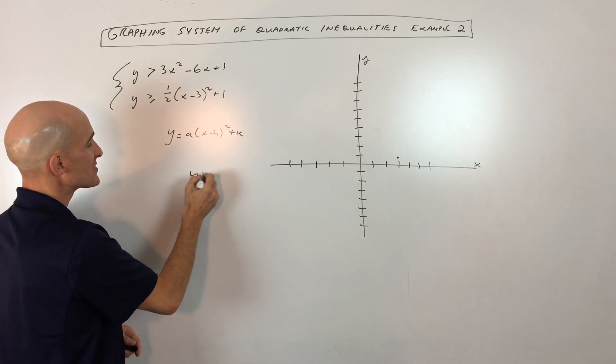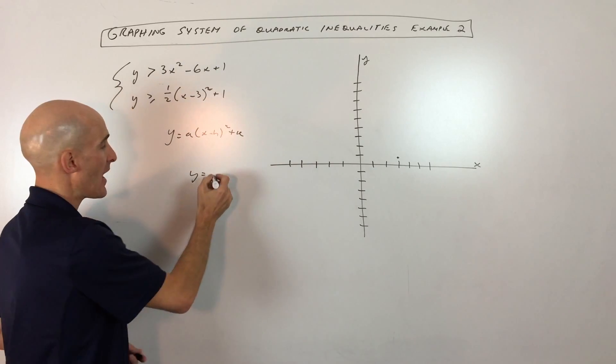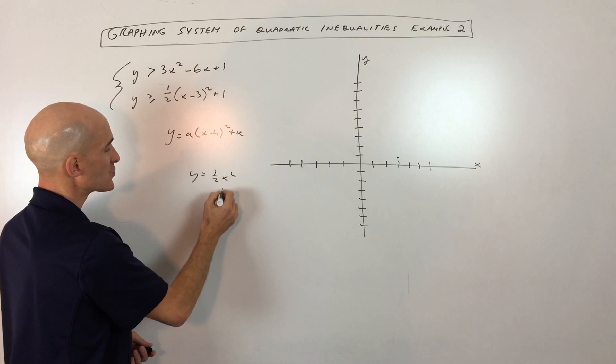And the 1 half, that tells us that it's going to be compressed by 1 half. So we can look at the parent function, y equals 1 half x squared.